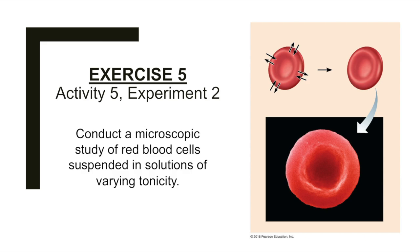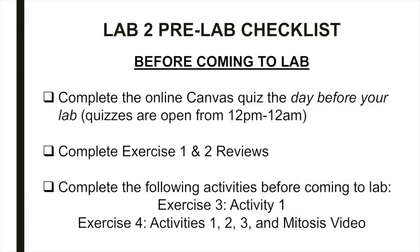You will be omitting exercise five, activities 3, 4, 6, and 7. Although we are omitting some activities, you'll still be responsible for reading and studying the information on active processes on pages 59 and 60. A few reminders as we enter the second week of Anatomy and Physiology Lab: be sure to take your pre-lab quiz on Canvas the day before your lab, complete your reviews for exercises 1 and 2 before coming to lab, and bring your masks and face shields to lab and wear closed-toed shoes. Complete the following activities before coming to lab this week: exercise three activity one, and exercise four activities 1, 2, 3, and the mitosis video on Canvas.